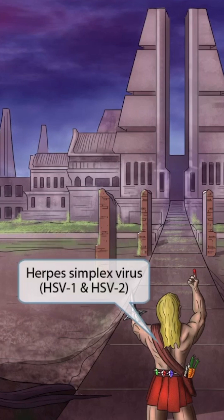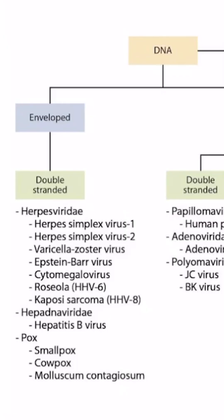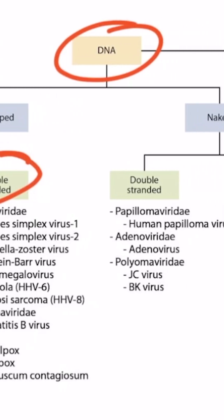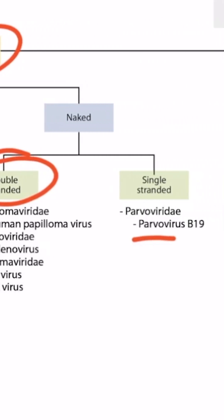Next, assume that all of our viruses are enveloped unless we indicate otherwise. A non-enveloped or naked virus will be indicated by a naked person in our videos. So, if there aren't any naked people, then assume that the virus is enveloped. Finally, assume that all the viruses are single-stranded unless we show something in the image that indicates otherwise. Double-stranded viruses will usually be represented with two prominent things that are parallel to one another, just like a double-stranded genome. In this overview image, you can see that all DNA viruses are double-stranded except parvovirus, and most RNA viruses are single-stranded, so no symbols are needed to indicate this.